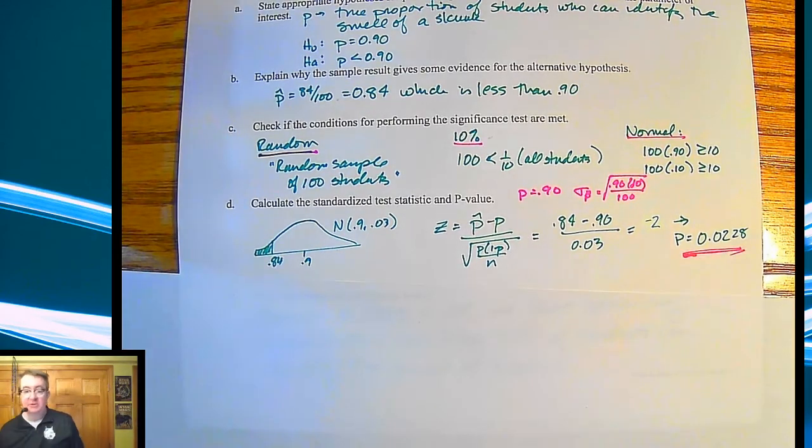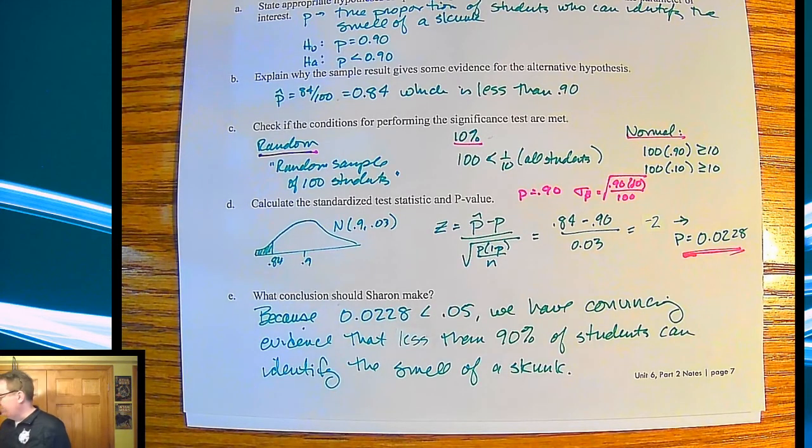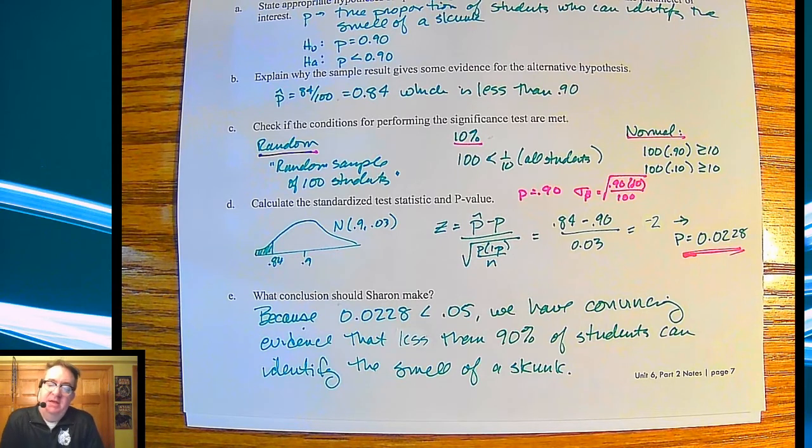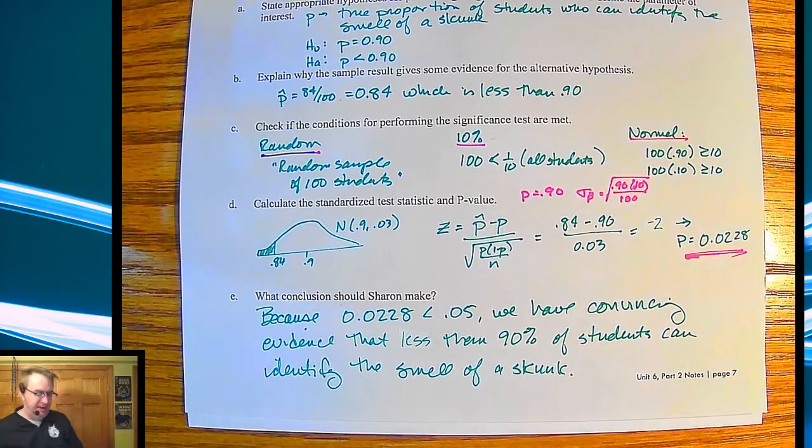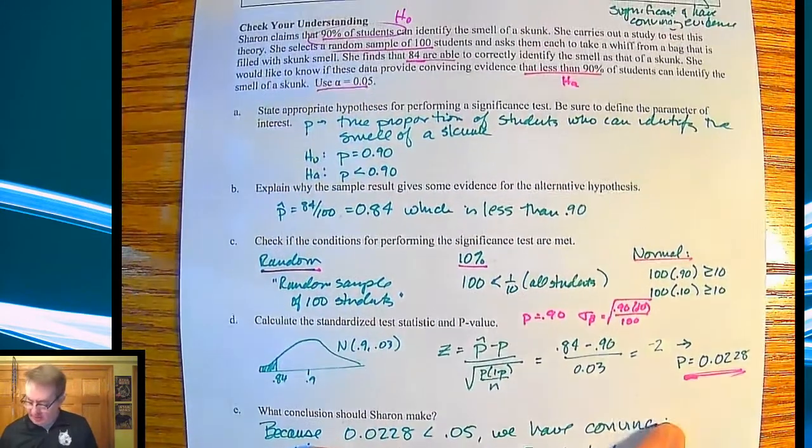So now conclusion time. Because 0.0228 is less than 5%, we have convincing evidence that less than 90% of students can identify the smell of a skunk. That's right, tackling the big issues here. In reality, it's just a matter of, it may not be skunk, it may be something else. But in reality, the big important thing here is that you guys kind of get used to this.